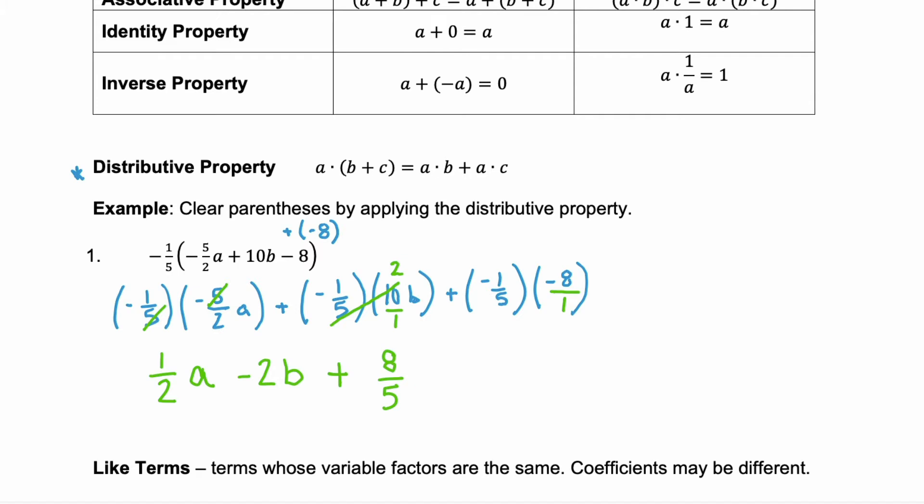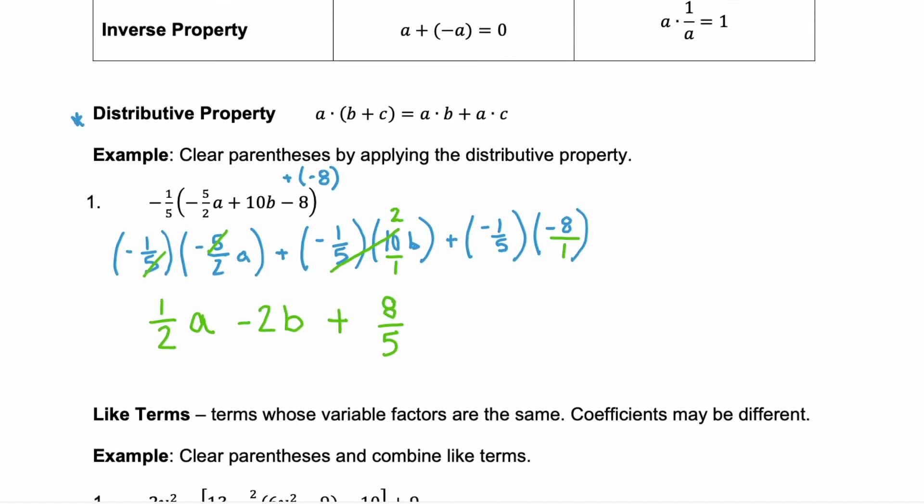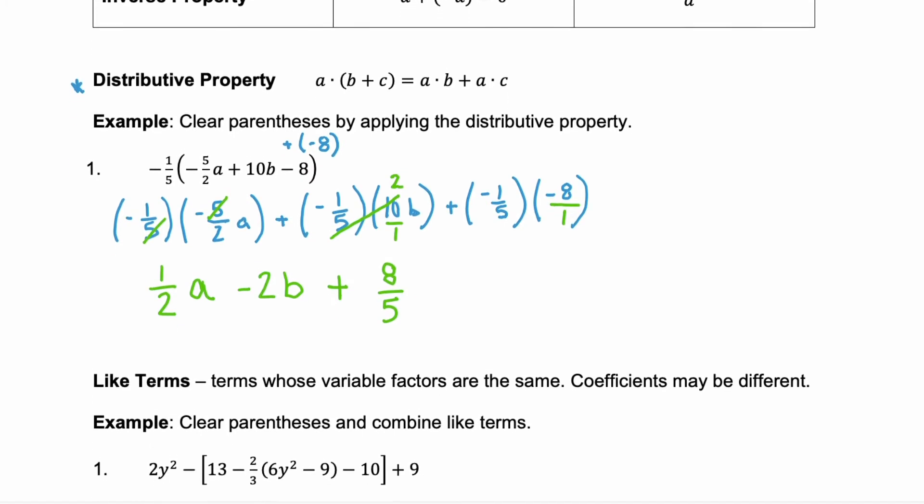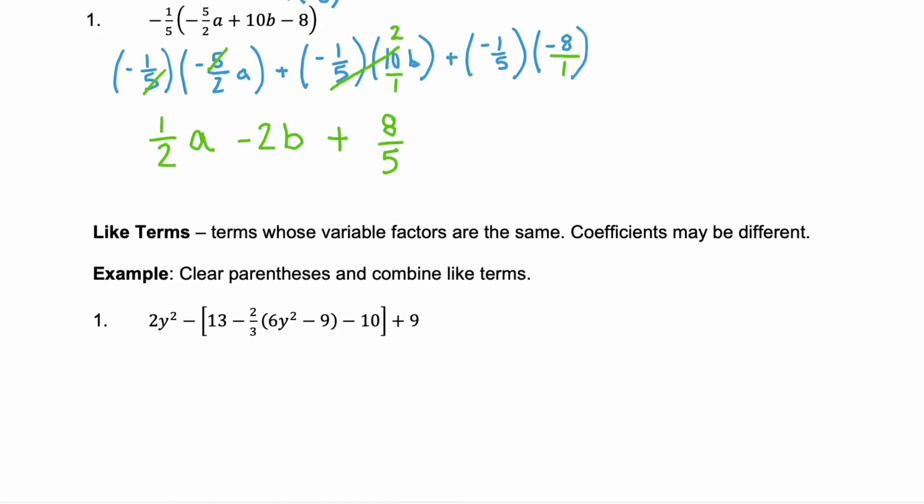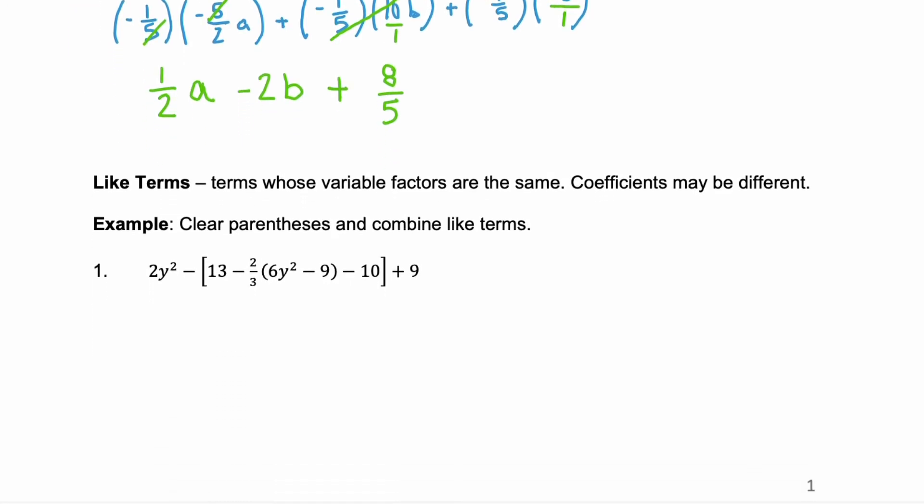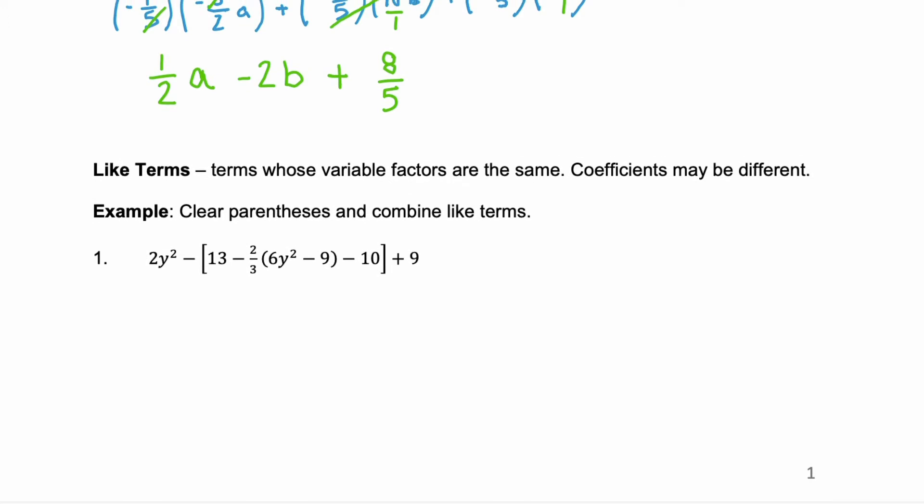Now what if we have more terms than that and things that look similar? Those would be called like terms. Like terms are terms that have variable factors that are the same. But the coefficients of these terms or the number in front can be different. And we can combine like terms.